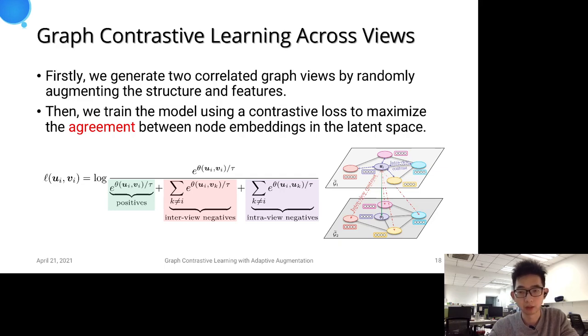Embeddings of the same node across two views constitute the positive pairs. We do not explicitly generate negative samples, and all other node embeddings across the two views are treated as the negative samples. Then, the final objective is defined as the average over all positive node pairs.